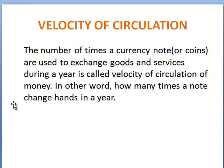The next concept is velocity of circulation. Velocity of circulation means the number of times a currency note or coin is used to exchange goods and services during the year — in other words, how many times a note changes hands in a year. If I spend one dirham to buy one Pepsi tin, then that coin reaches the seller who may use it to buy another Pepsi tin. In this way, one coin has made two transactions worth two dirhams, so the velocity of circulation for that coin is two. When economic activity in a country is high, as in a boom, velocity will be high; and if the economy is facing a slowdown or recession, velocity will be low. The concept of velocity of circulation is very important when we discuss the supply of money and inflation.